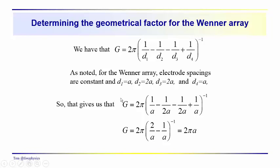The apparent resistivity is equal to the geometrical factor times the potential difference divided by the current injected into the ground. Substituting d1=a, d2=2a into the geometrical factor expression, we get 1/a minus 1/2a minus 1/2a plus 1/a, all to the minus one power. The 1/a terms add to 2/a, and the two 1/2a terms give minus 1/a, resulting in 1/a to the minus one power. So the geometrical factor for the Wenner Array is simply 2πa.